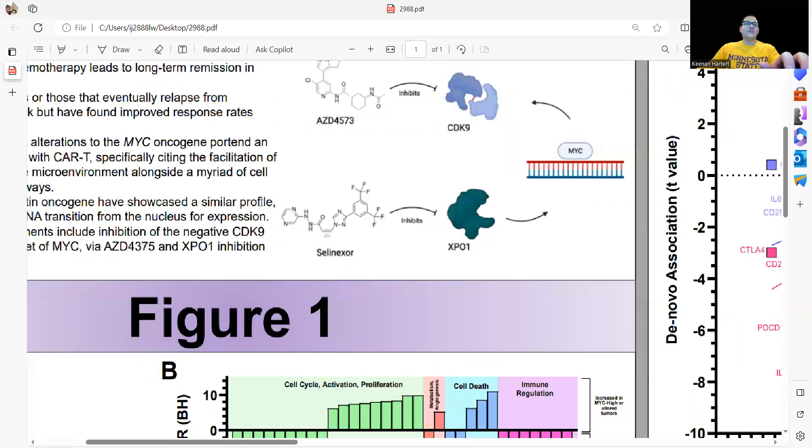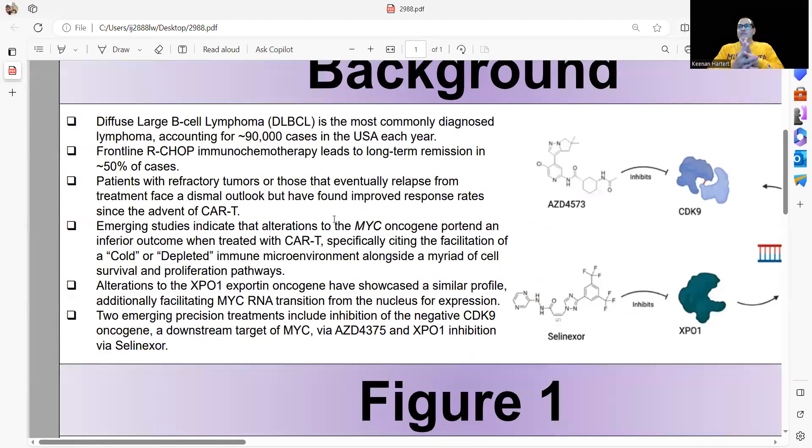So let's take a quick look at the intro. The basic idea: DLBCL is still the most commonly diagnosed blood cancer, 90,000 per year. We're doing quite well. RCHOP does great at frontline, but if you fail RCHOP, you're looking at a very dismal outlook. That was until the advent of CAR-T only a few years ago.